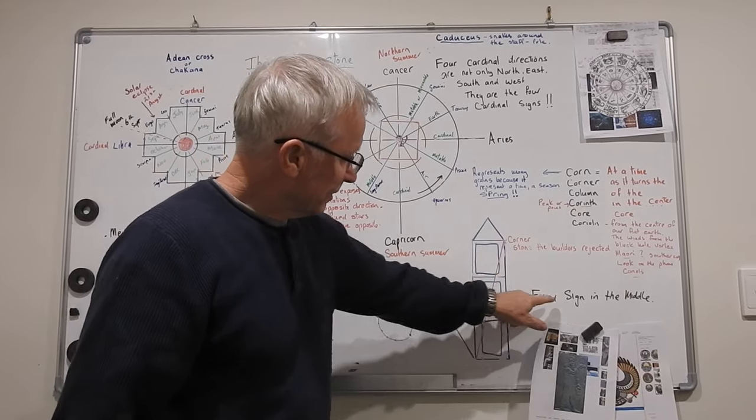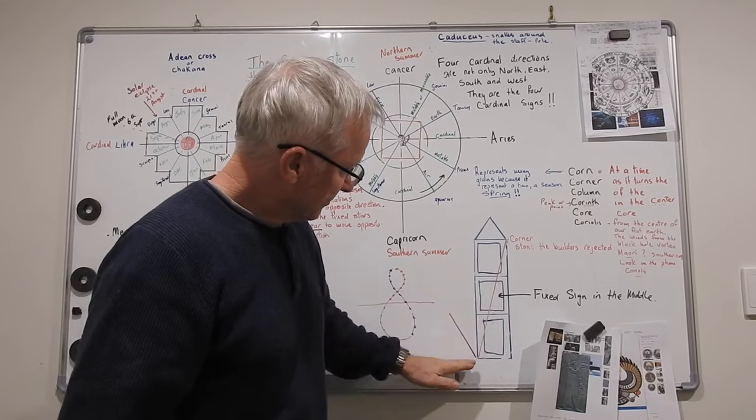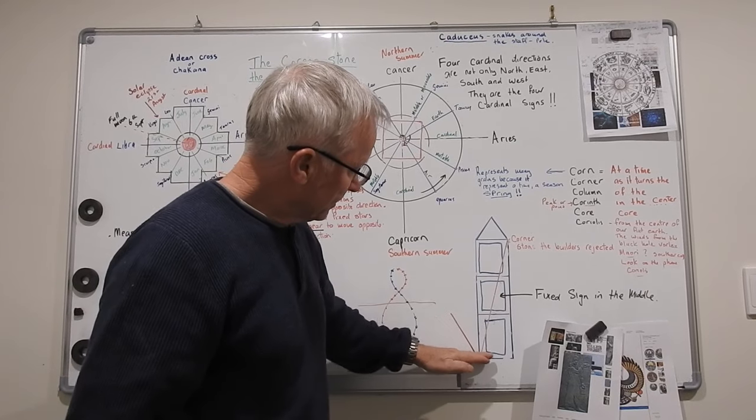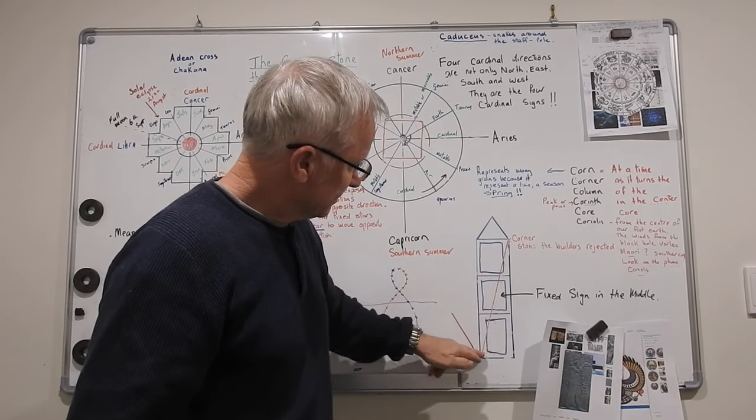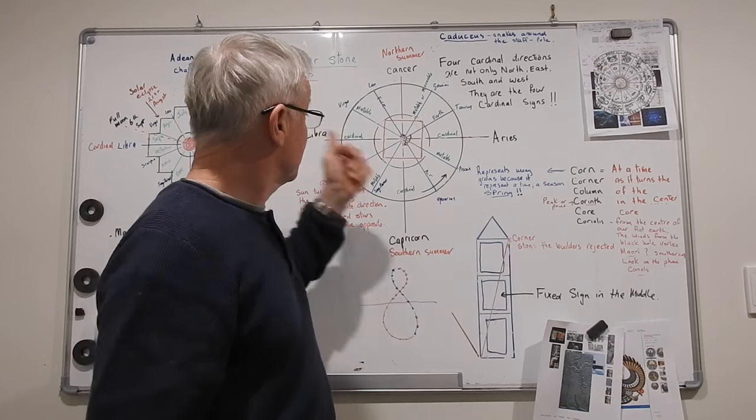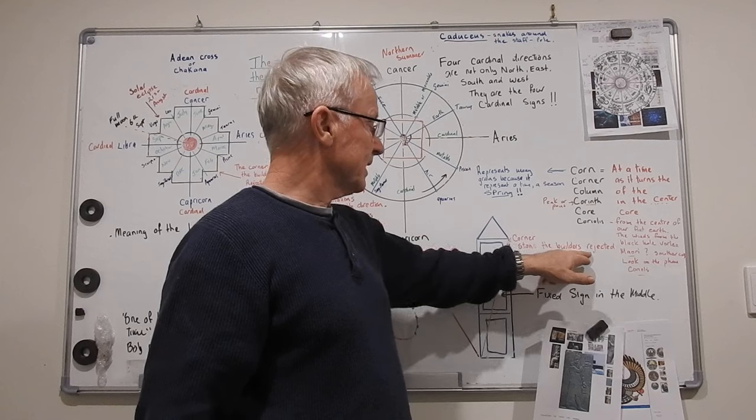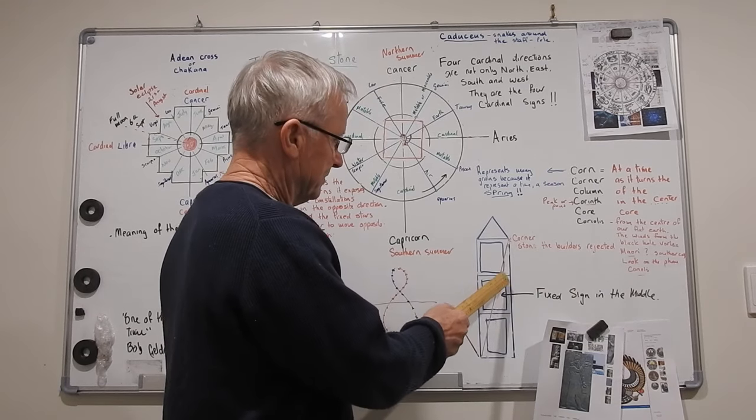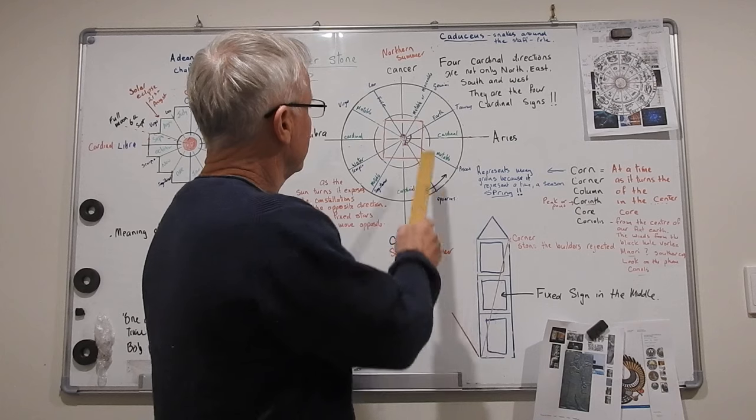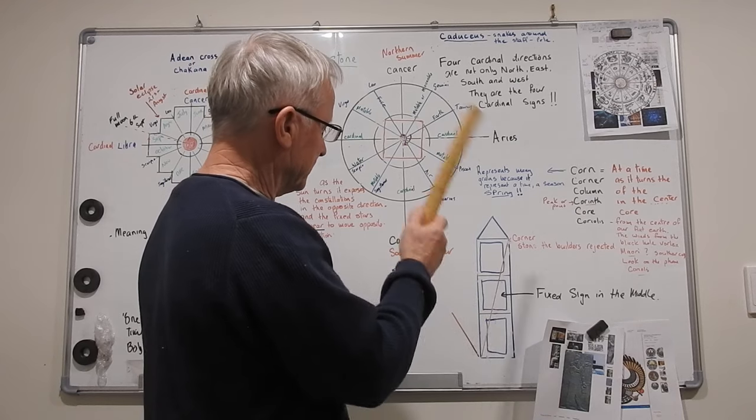The middle one here is the fixed sign, it's not affected. It comes around the corner here, and these are the corners. But there's a specific corner I'm about to get to. Cornerstone the builders rejected. It's all to do with this, that stone, pyramid stone, obelisk stone.